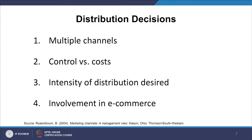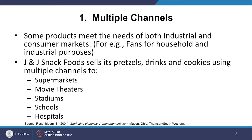Distribution decisions are also associated with multiple channels, control versus costs, intensity of distribution, desired involvement in e-commerce. Some products meet the needs of both industrial and consumer markets — for example, fans serve both household and industrial purposes. J&J Snack Foods sells its pretzels, drinks and cookies through multiple channels to supermarkets, movie theatres, stadiums, schools, hospitals and so on. The larger the number of channels, the larger is the reach, but management becomes difficult and the probability of intra-channel conflict is high. One channel partner may complain that you have given more items to another channel partner, who may be seen as a competitor.